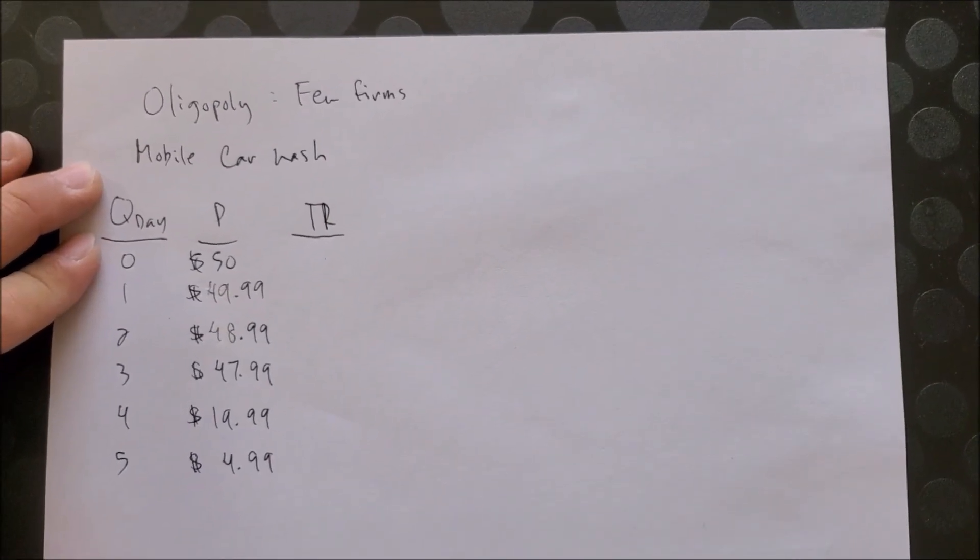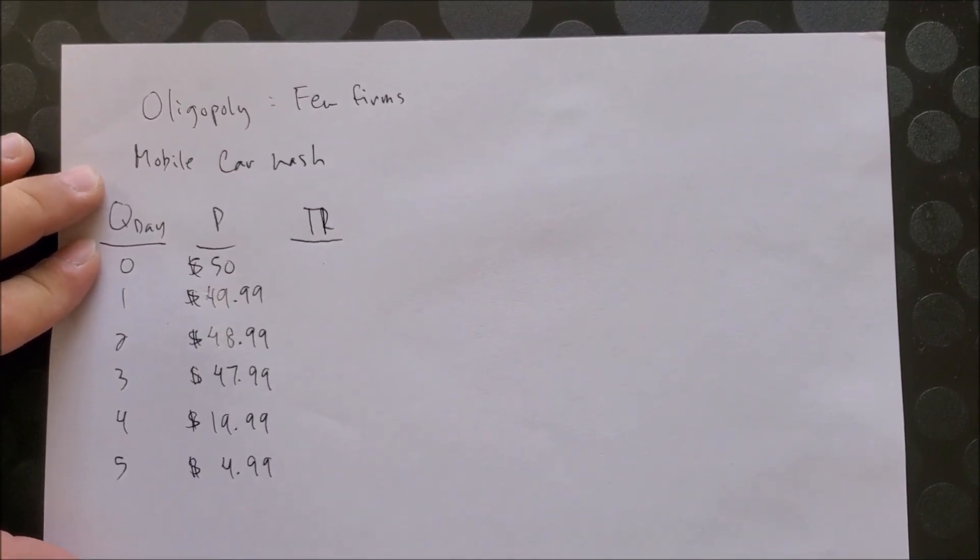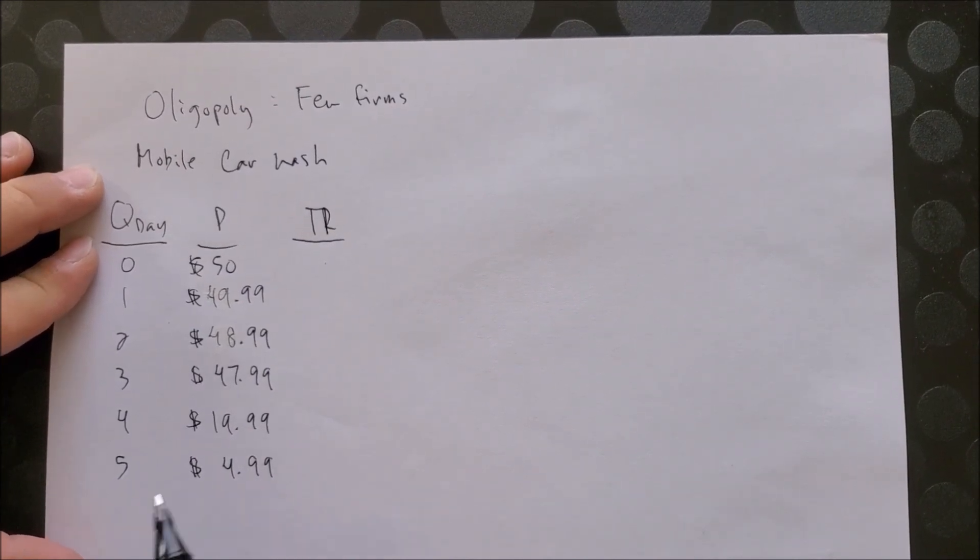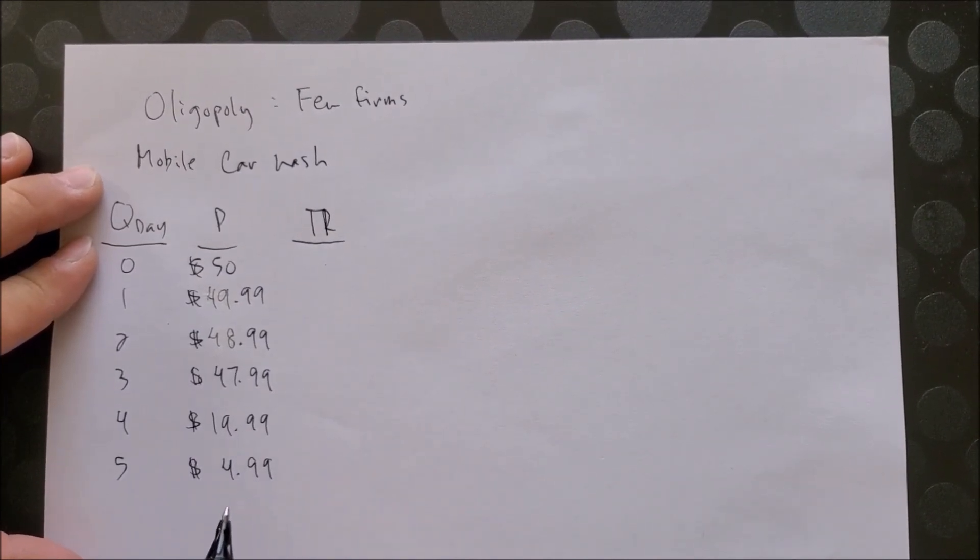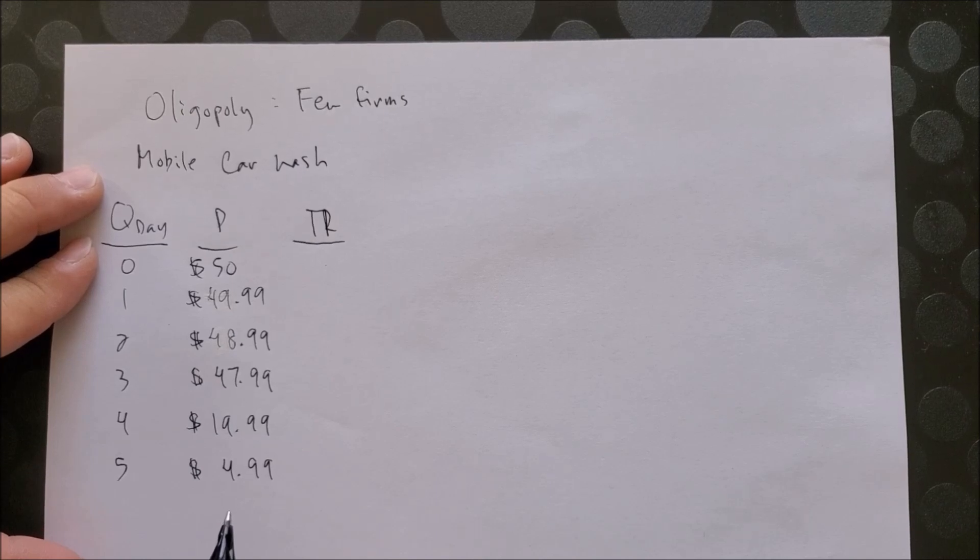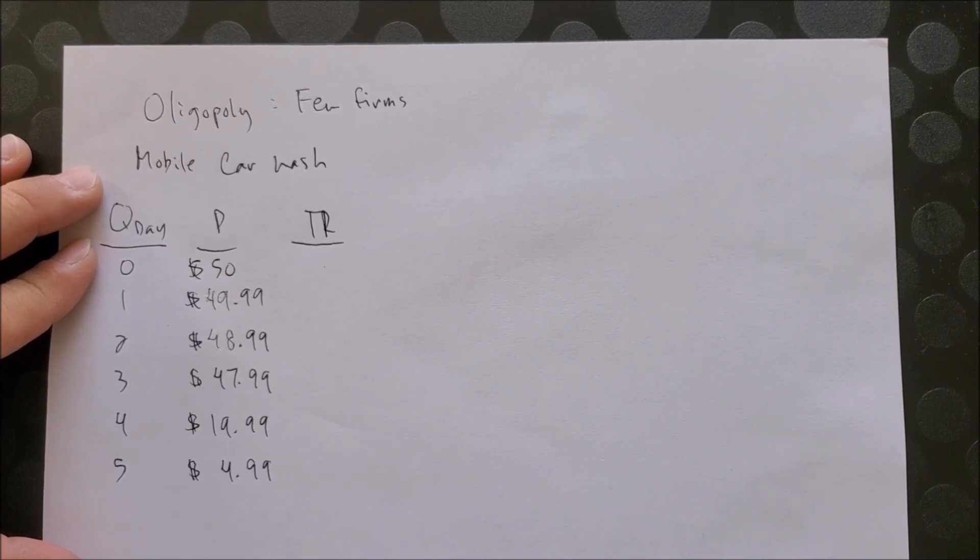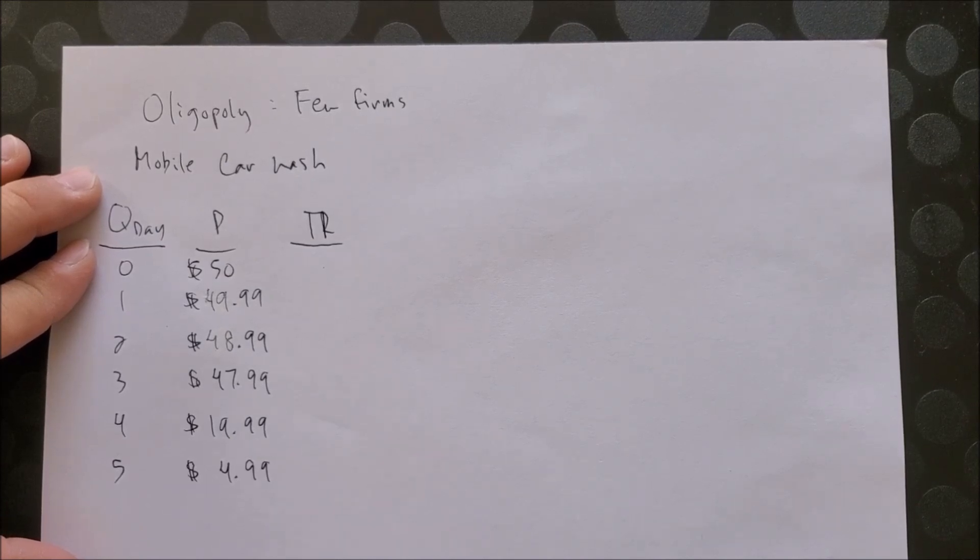Hey folks, today we'll talk about oligopoly. Oligopoly has a few firms, either two, three, four, up to maybe even eight. A good example of an oligopoly would be the diamond industry where we have about two diamond producers in the world, a duopoly, and they do control about 90% of the diamonds that are mined worldwide.